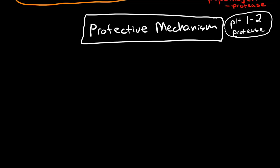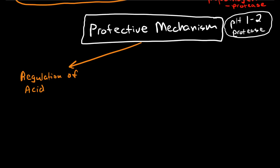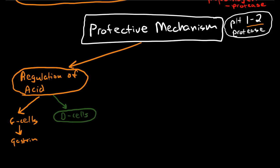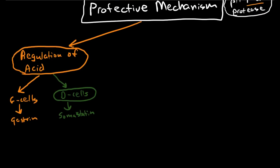The first protective mechanism is regulation of acid production. This is very important because we don't have a pH of one to two all the time — it only gets very low when there is food in the stomach, in particular amino acids. This regulation of acid production occurs because of the G cells and their secretion of gastrin, and the delta cells and their secretion of somatostatin, which provides that negative feedback loop.